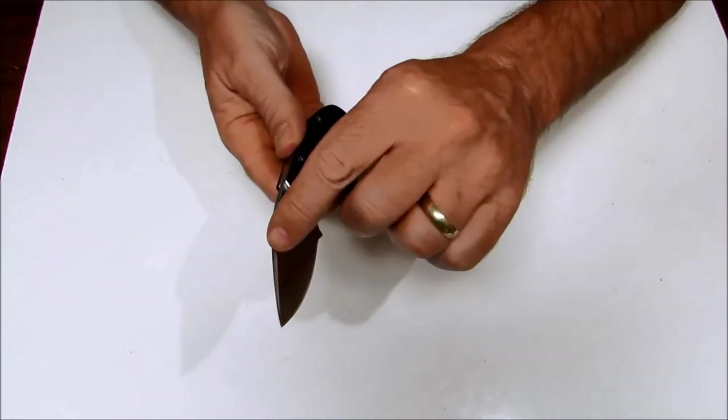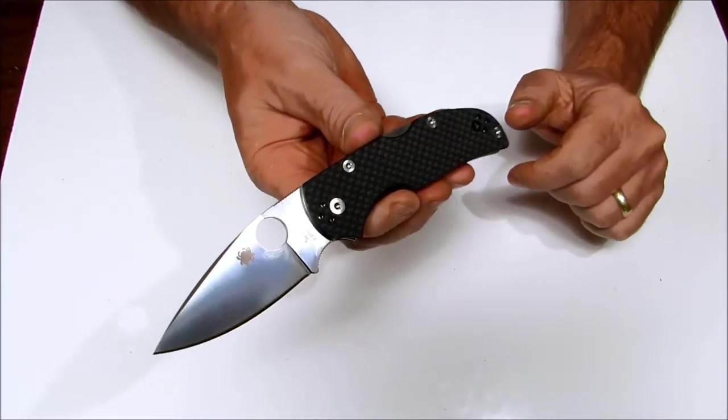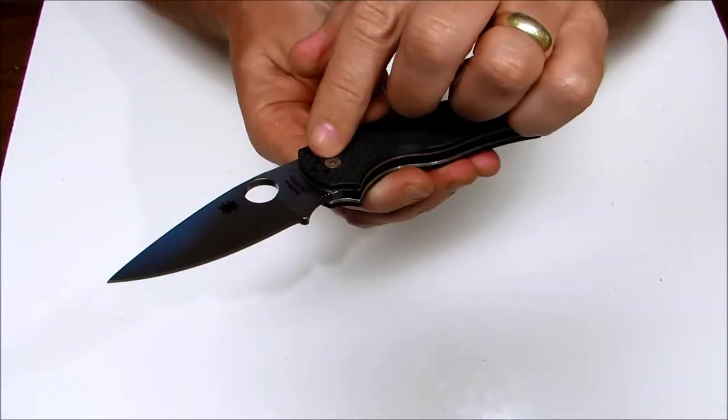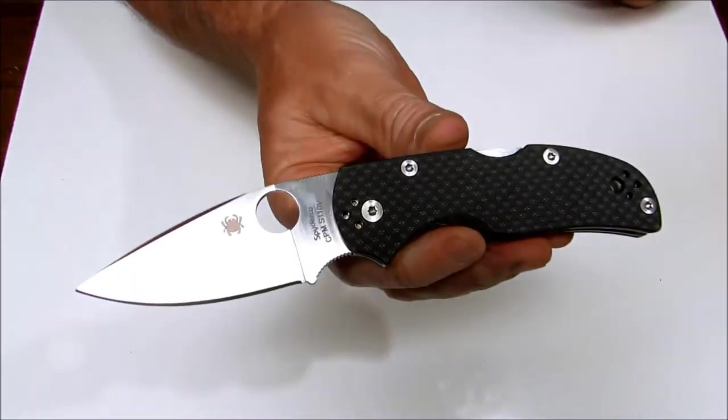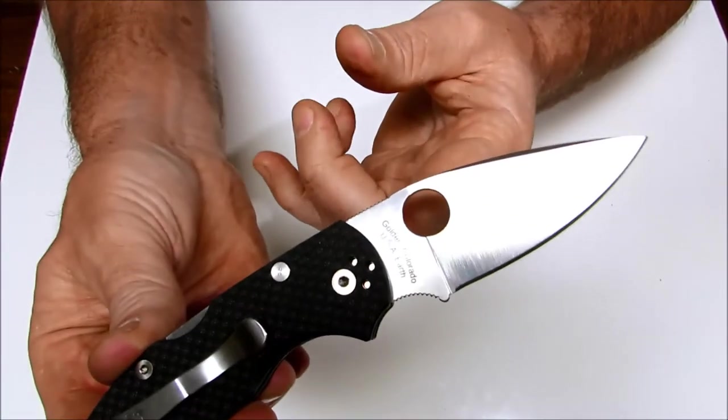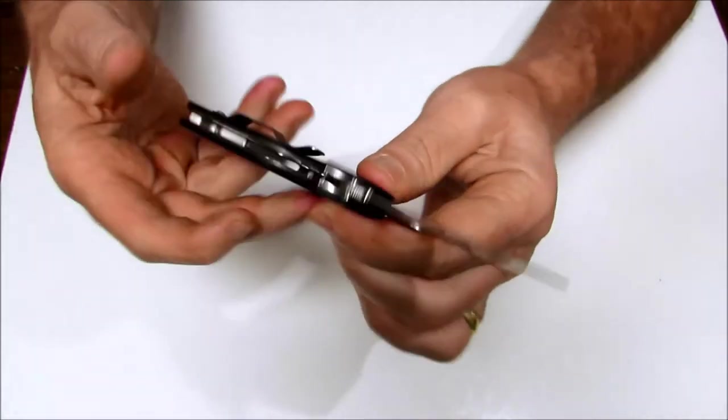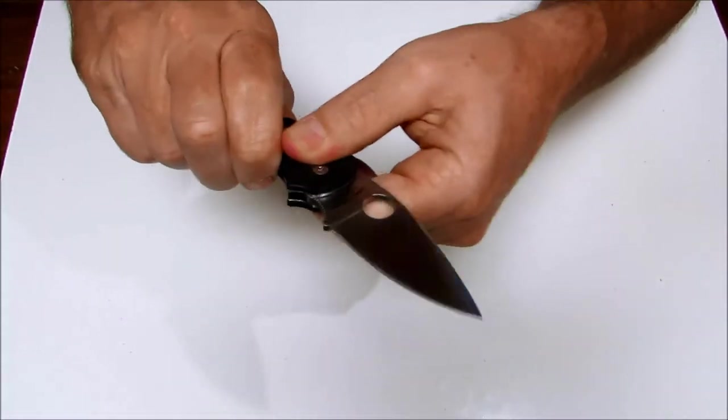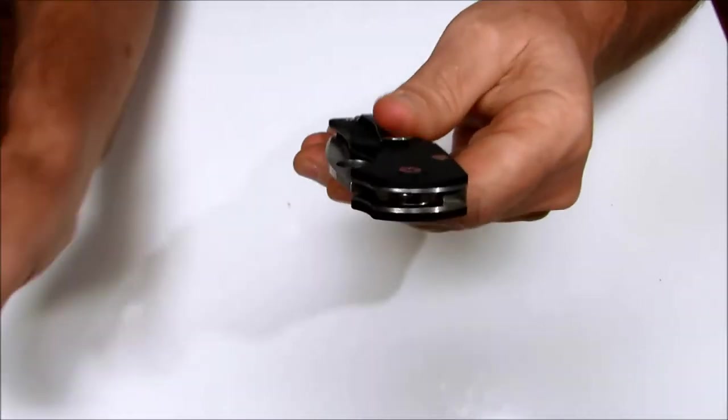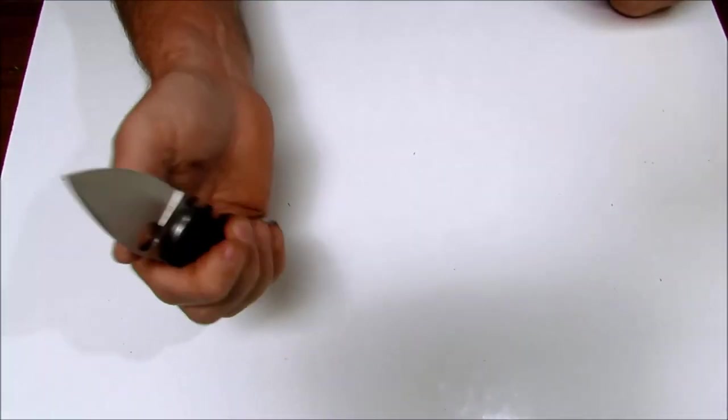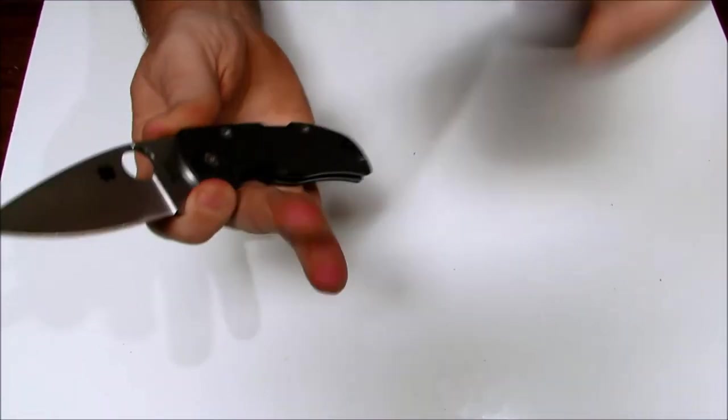It has a swedge grind on the forward portion of the blade. Spyderco CPM S110V, and it has spine and choil jimping.